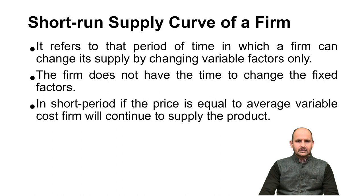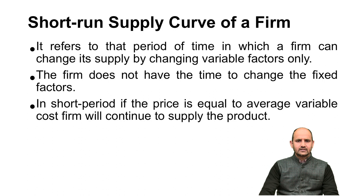First we will take the short-run supply curve of a firm. The short run refers to the period in which a firm can change supply by changing variable factors only. The firm does not have enough time to change the fixed factors. They can only make changes in variable factors in order to meet demand in the short period.